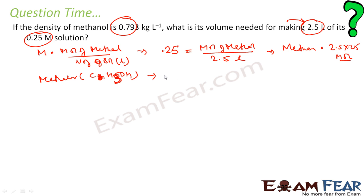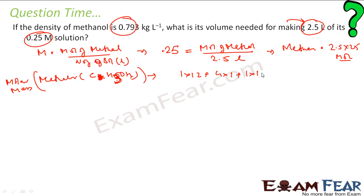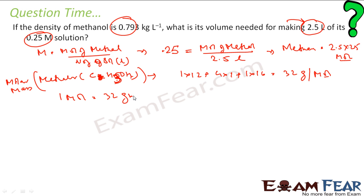The molar mass of methanol — carbon is 1, so 1 × 12. Hydrogen is 3 + 1 = 4, so 4 × 1. Oxygen is 1, so 1 × 16. This comes out to be 32 grams per mol. That means 1 mol equals 32 grams of methanol.